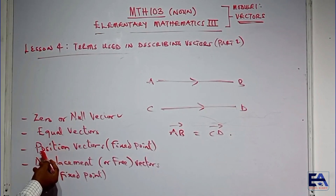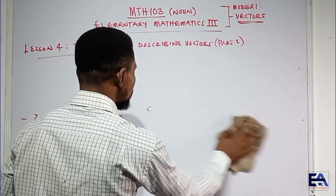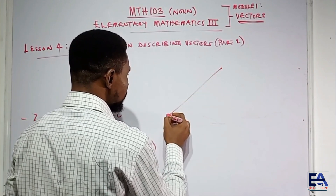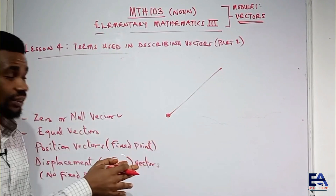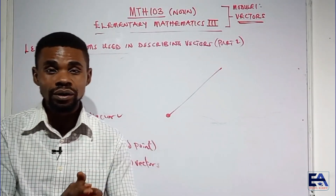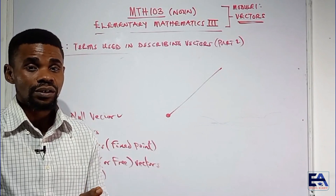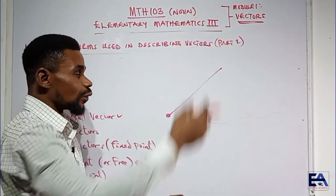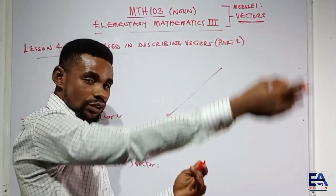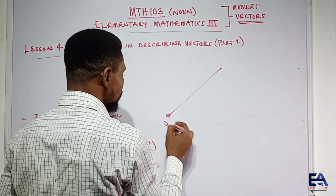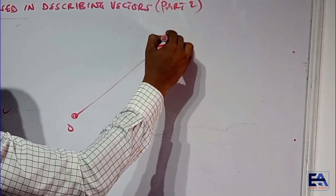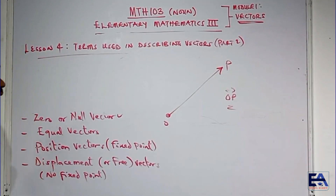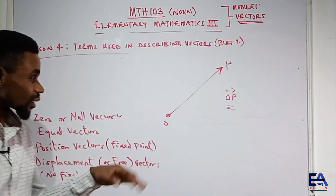Position vectors are vectors that are fixed to a particular point. All the vectors we have been dealing with since we started this journey are examples of position vectors. They are tied to a particular axis — one end is fixed while the other end flows freely. They usually start from an origin, so if you have point P, you say OP is a position vector.